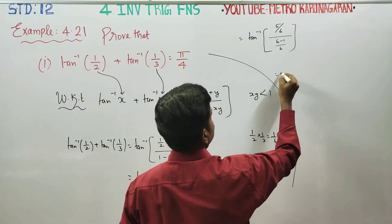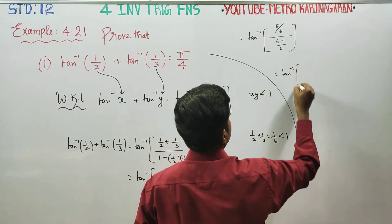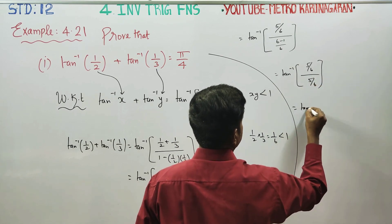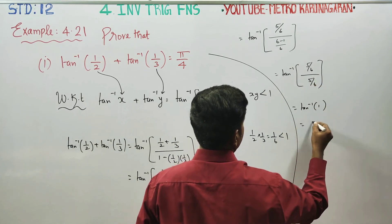Next stage, tan inverse of 5 by 6 by 5 by 6. Cancel, you will be getting 1. What is tan inverse of 1? 45 degree.